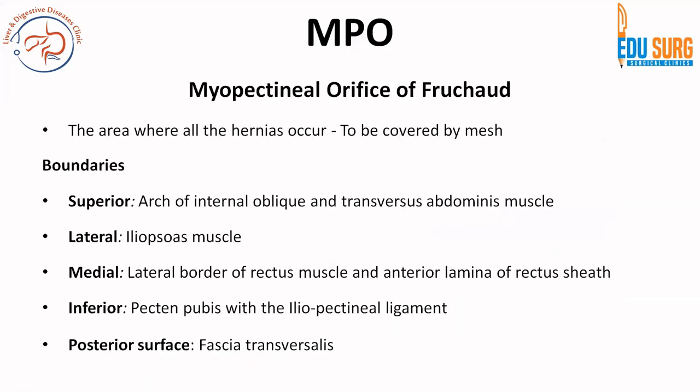One of the important questions commonly asked is the myopectineal orifice of Fruchaud. To summarize: the myopectineal orifice of Fruchaud is the area where all hernias occur — that is, direct, indirect, and femoral — and this is the area that has to be covered by mesh. Remember it is not the area where takers are to be applied. The myopectineal orifice of Fruchaud is the area which should be covered by mesh.